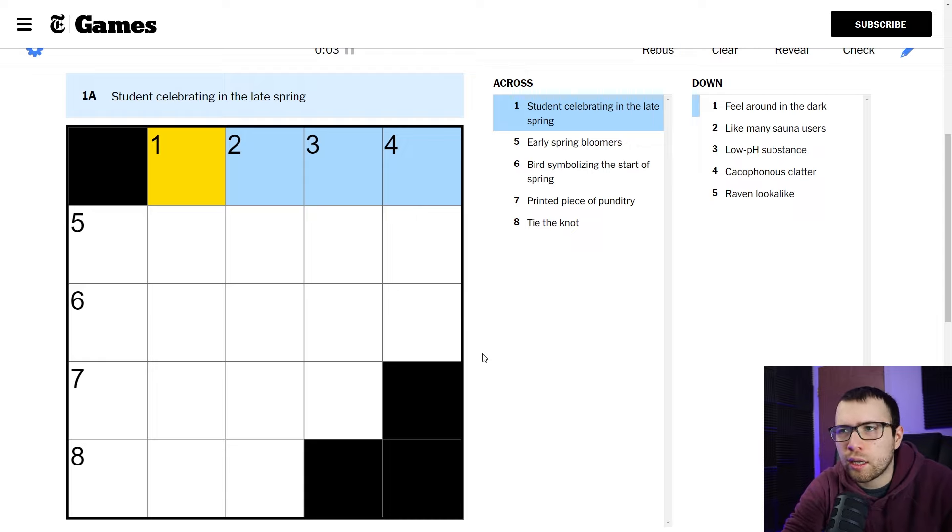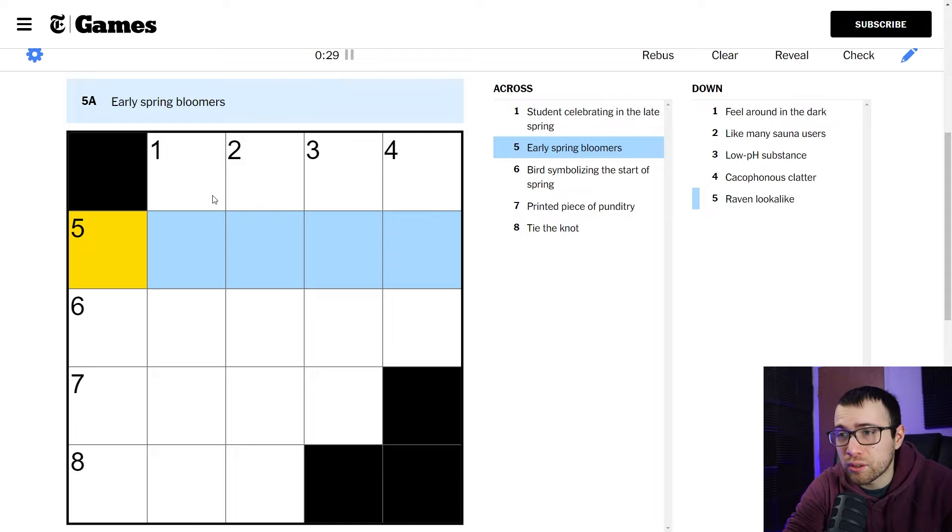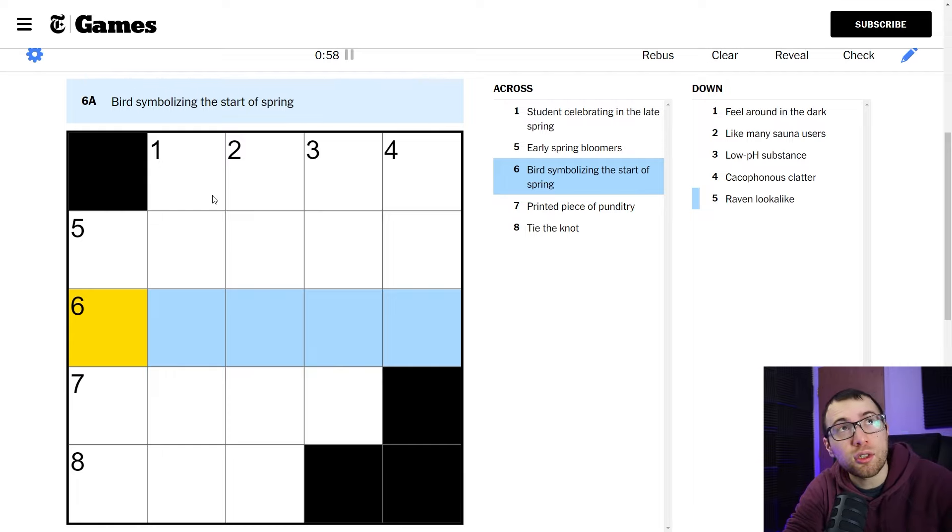Student celebrating in the late spring. Student celebrating in the late spring. What would you celebrate in the late spring? Is it... I mean, it could be PROM. Is that... Or... I was thinking more like graduation. I don't know. But maybe that... I don't know. Early spring bloomers. There's that word, bloom. Early spring... What does that mean? Something like a flower? Or a plant? I mean, plant seems too generic. I don't know. Bird symbolizing the start of spring. What's up with all these spring words? Is it because spring... Is spring technically just starting right now? I didn't even think about that. I guess it probably is, right? Yeah. Okay.